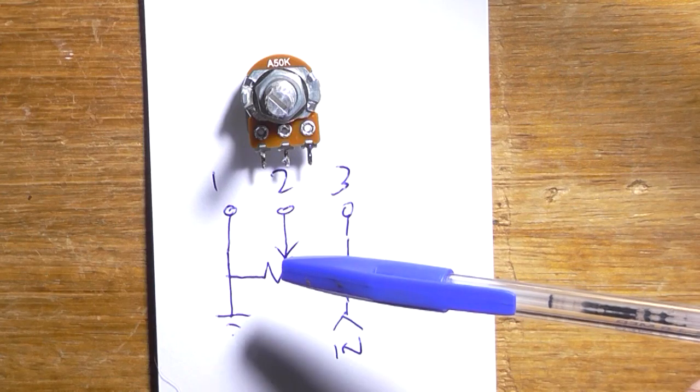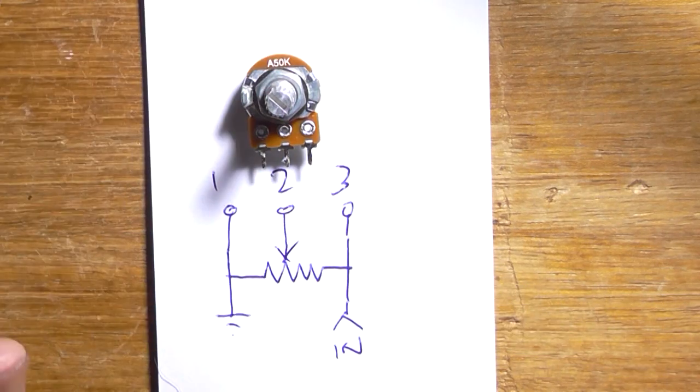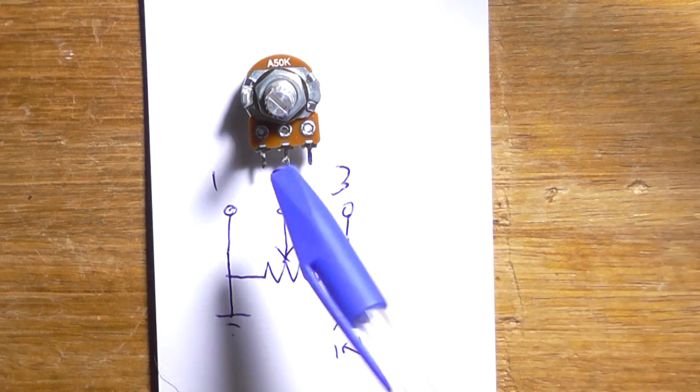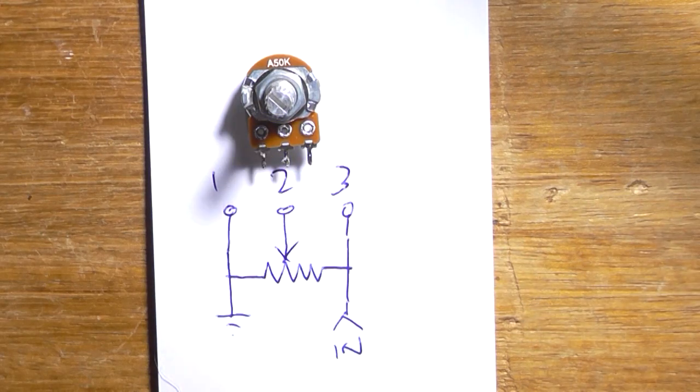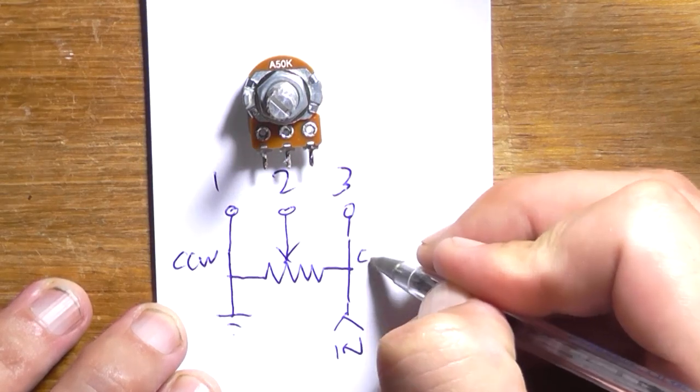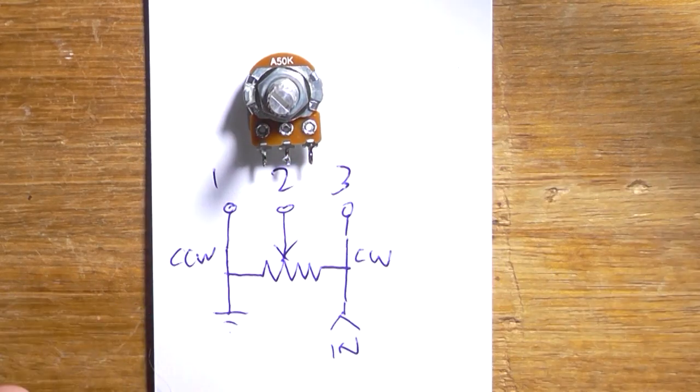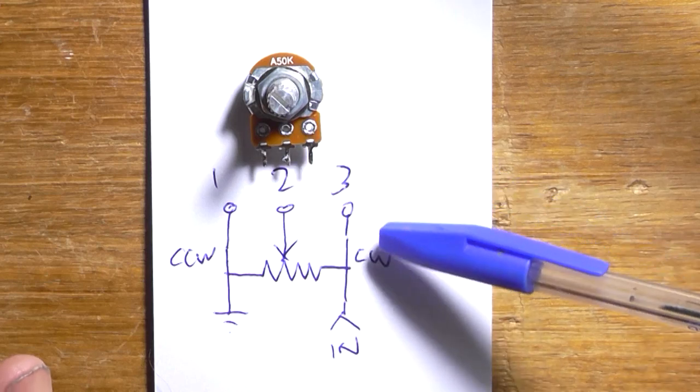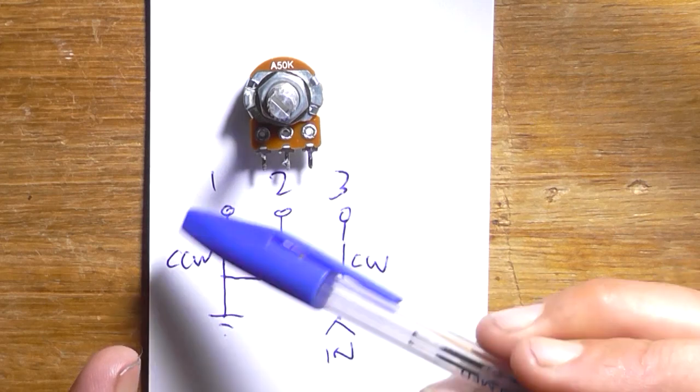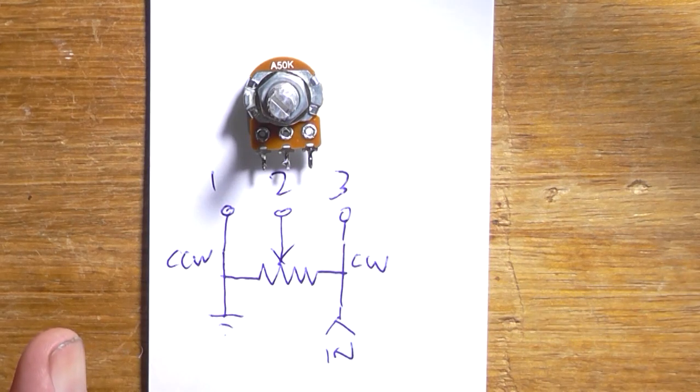So take this badly drawn schematic representing the pot as it's viewed from the front. We've got the ground here on pin 1 which is the counterclockwise position CCW. Pin 3 is clockwise, and this center one is the wiper. That's the way it would look as you wire it to a pot.